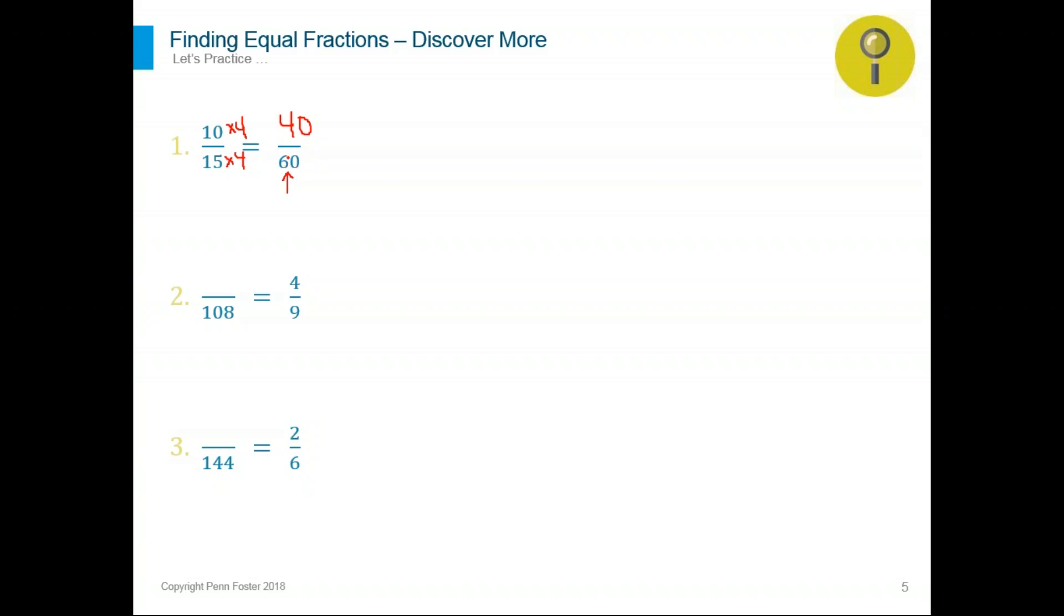If you have any questions, you can type your questions in the questions box. Number two, the same thing. What over 108 equals 4 over 9? In this case, 4/9 is the given fraction. The denominator in the equal fraction should be 108. What times 9 will give you 108? We can divide 108 over 9 to give you the factor. And the factor in this case is 12. So since we multiplied 9 times 12, we have to do the same thing on the top. 12 times 4. And that will give you the numerator for the equal fraction: 48.